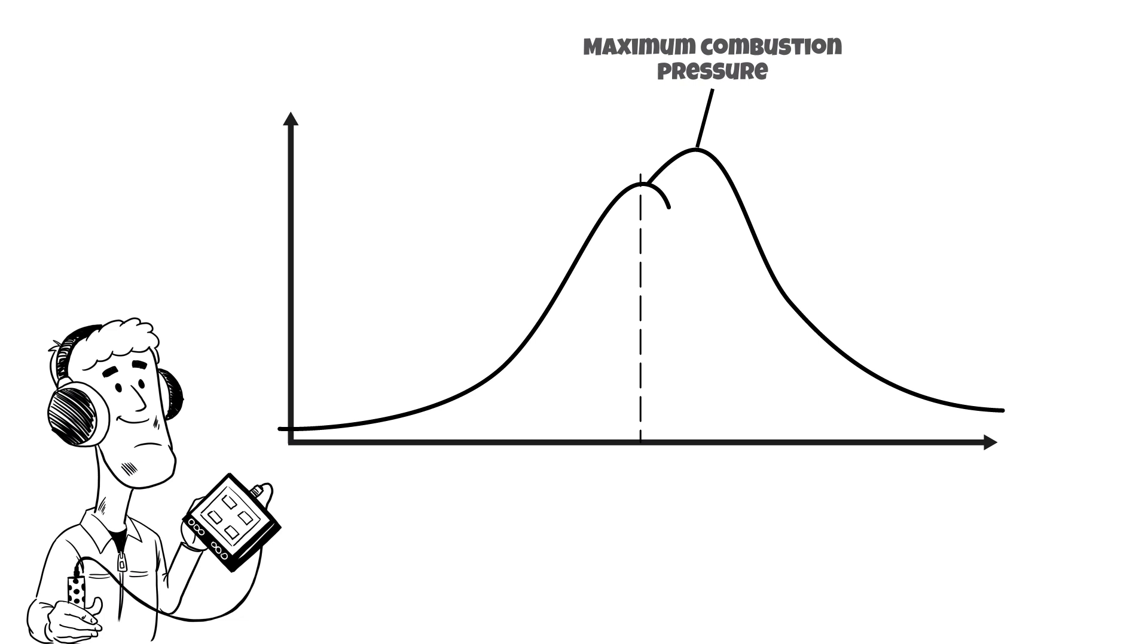Only the Primit Viewer software shows the combustion pressure curve, which is the additional pressure generated due to combustion. At the peak, no additional pressure is generated due to combustion. This defines the end of combustion, only shown by Primit.